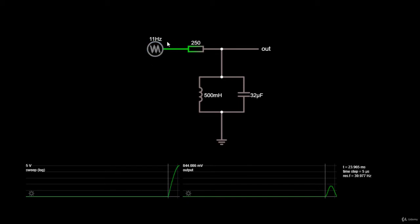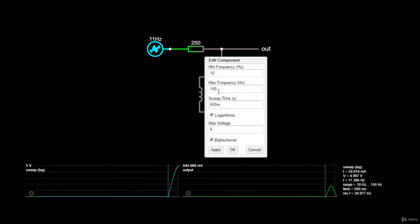We also have a function generator that will generate a sine wave starting from 11 Hz and will go all the way up to 150 Hz.